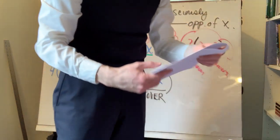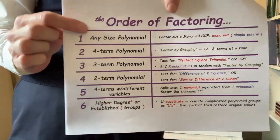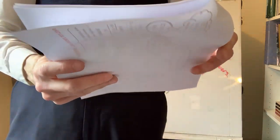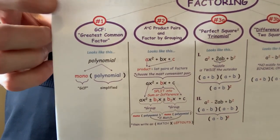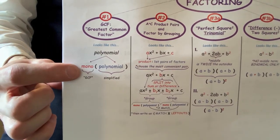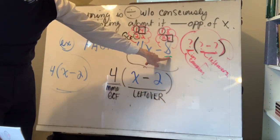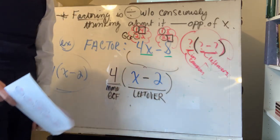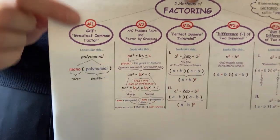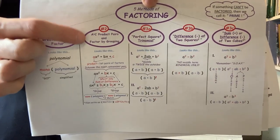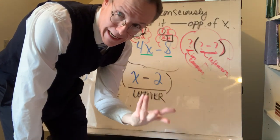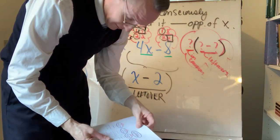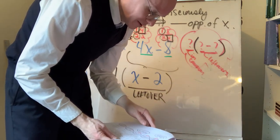To explain this diagram again — once you get comfortable with factoring according to these different techniques — what we just did was factor out a greatest common factor, a monomial. The leftover polynomial is the same width as what you started with, so if it was a binomial it remains a binomial. Usually more useful is doing these two things in tandem: AC product pairs and factoring by grouping.